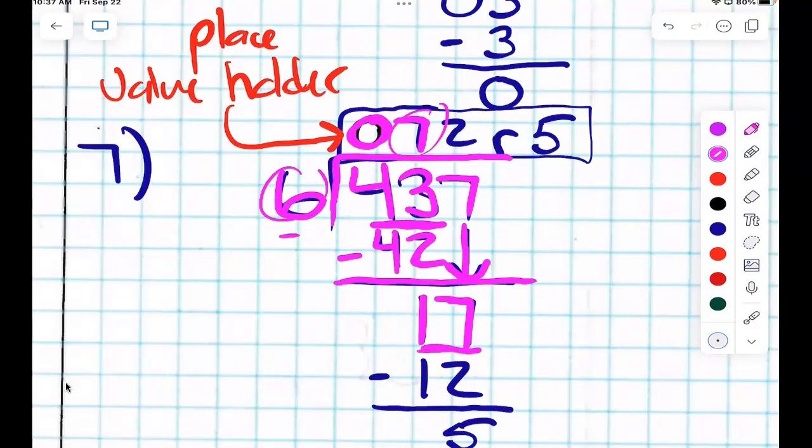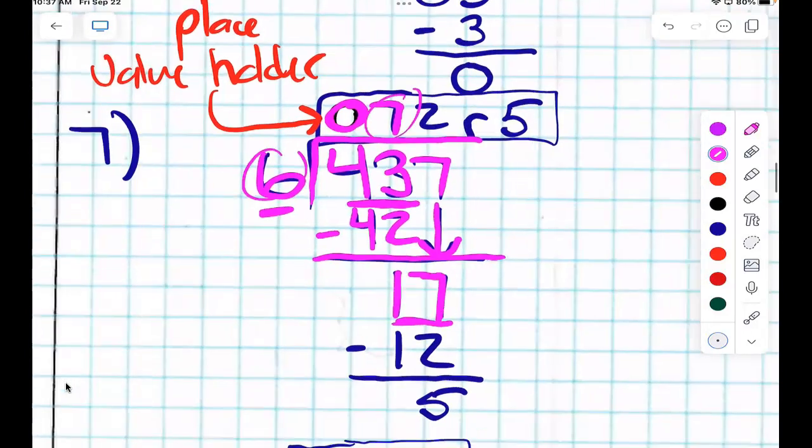Yes. So my new dividend is 17. I'm still using six. Does six go into 17? Yes. How many times? Two. So I put the two up here. So that's my division. Does McDonald's, McDonald's stands for what? Multiply. I'm going to multiply the two and the six, yes? Yes. What is two times six? Twelve.